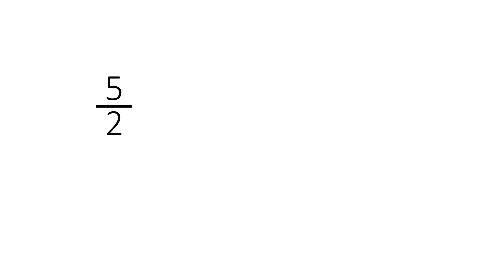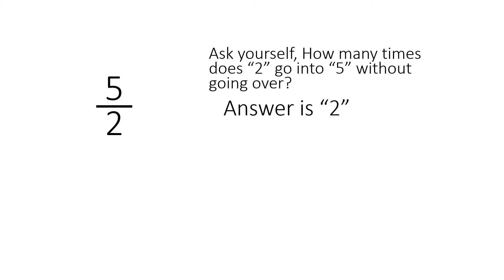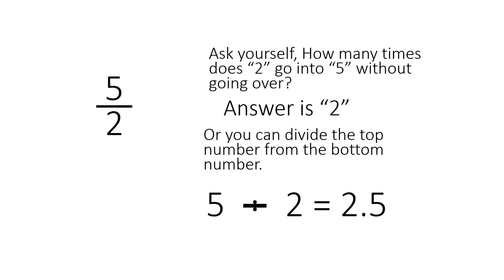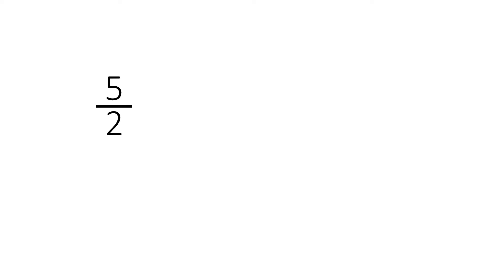So here we have 5 over 2. The top number is bigger than the bottom number. Improper. So what we do is we take the bottom number, number 2, and we ask ourselves, how many times does 2 go into 5 without going over? 2, 4, 6. So it only goes twice. The answer is 2. Or you could divide the top number from the bottom number. So the top number is 5 divided by 2 equals 2.5. So we have to take this improper fraction and make it proper.